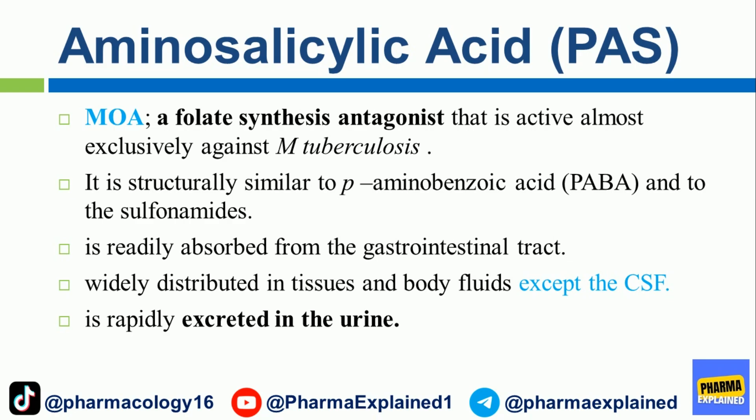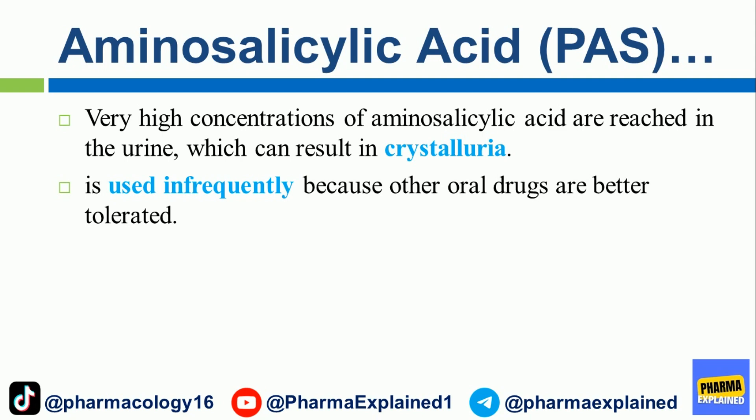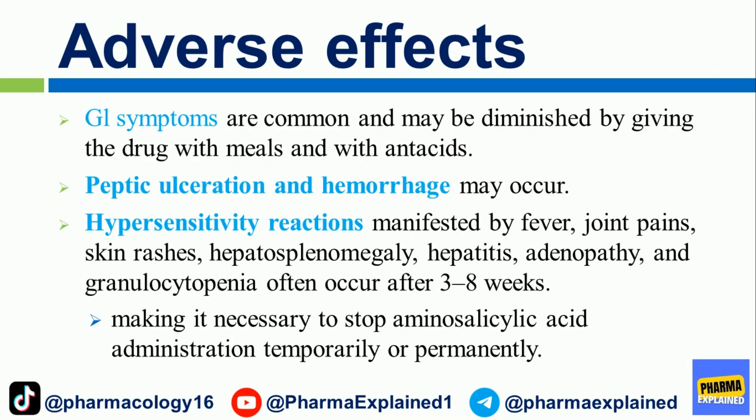Aminosalicylic acid (PAS) mechanism of action: It is a folate synthesis antagonist that is active almost exclusively against M. tuberculosis. It is structurally similar to para-aminobenzoic acid (PABA) and to the sulfonamides. Readily absorbed from the gastrointestinal tract, it is widely distributed in tissues and body fluids except the CSF, and is rapidly excreted in the urine. Very high concentrations of aminosalicylic acid are reached in the urine, which can result in crystalluria. It is used infrequently because other oral drugs are better tolerated. Adverse effects: GI symptoms are common and may be diminished by giving the drug with meals and antacids. Peptic ulceration and hemorrhage may occur.